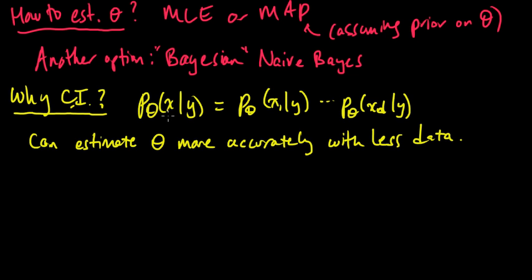So if you had assumed a more complicated model, this more general thing rather than the factorization, then typically it's going to require much, much more data to get a good estimate for your theta, or all the different parts of theta.